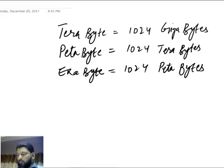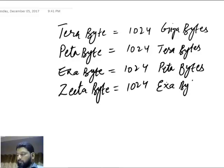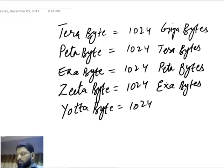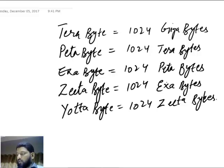Then you have zettabyte, which equals 1024 exabytes. And then you have yottabyte, which equals 1024 zettabytes.